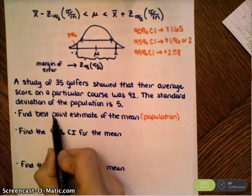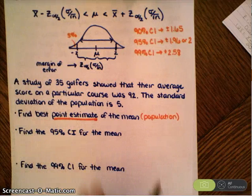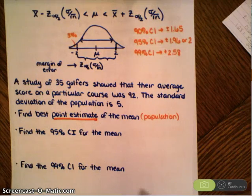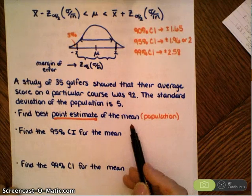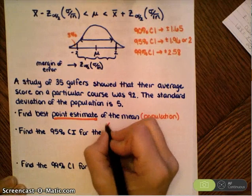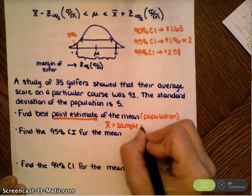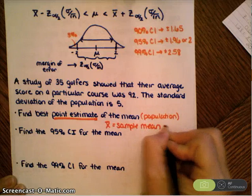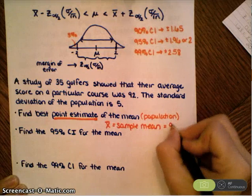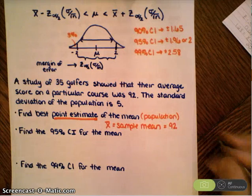What would be the best point estimate? All this means here is I need to know what's a data value that I would use to estimate the population mean. Well, the best estimate is always going to be the sample mean for the population, which in this case was 92. That's the best point estimate at this time that I have.